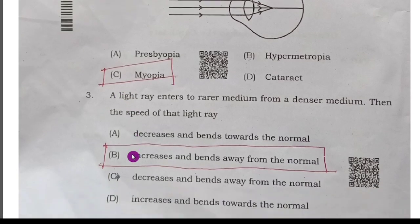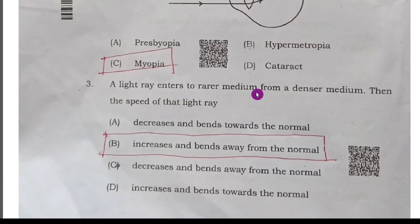If the light ray enters to rarer medium from a denser medium, then the speed of the light ray always increases and bends away from the normal.